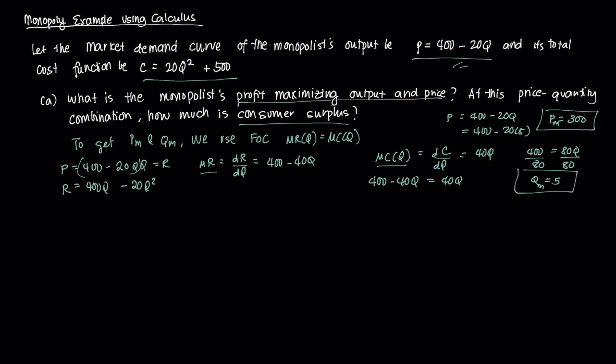Now we need to calculate the consumer surplus. By definition, the consumer surplus under a monopoly CS equals the integral from q = 0 to q = qm of the demand function dq minus pm times qm. This equals the integral from 0 to 5 of (400 - 20q) dq minus 5 times 300, which is 1500.